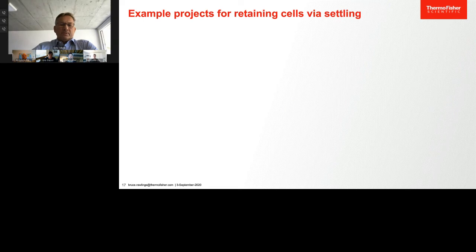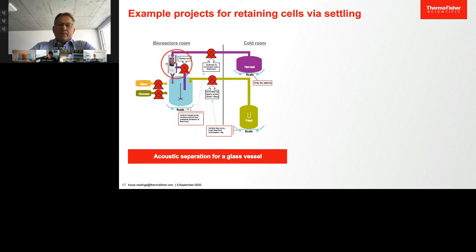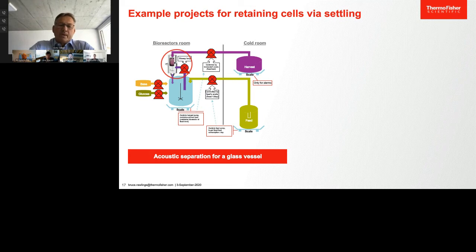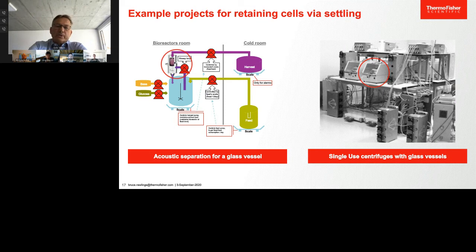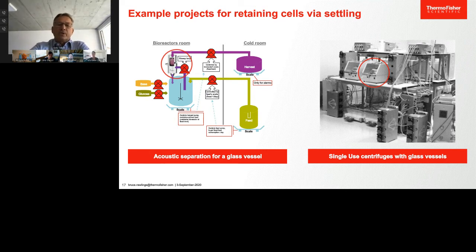I want to start with some examples we did in the past. One example is a project where we integrated a bio-acoustic separator on glass vessels. The client wanted a fixed feed rate, and therefore we controlled the harvest pump rate to maintain the working volume in the vessel. Another option was a centrifuge — we did something about 12 years ago with single centrifuges during commissioning for perfusion on glass vessels. We also did integration for perfusion in a 50-liter SUB.